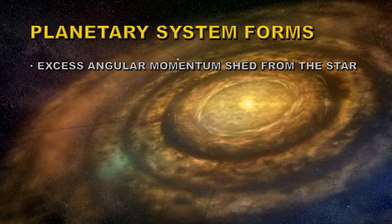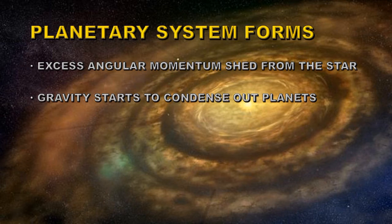As the star forms, it tries to shed excess angular momentum, forming a disk of material around the star. Gravitational collapse can then make that disk form planets orbiting the star.